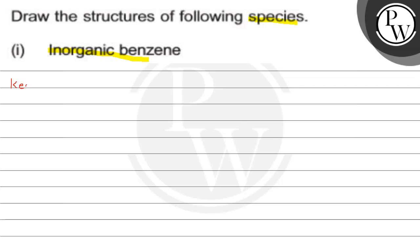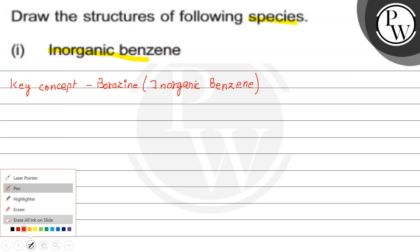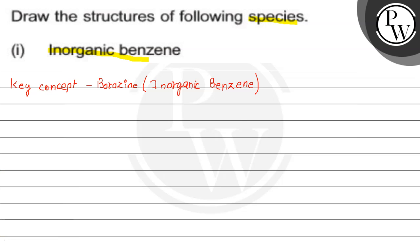Here we write the key concept of this question. Key concept is borazine, also called inorganic benzene. The chemical formula of inorganic benzene or borazine is BH₃ and NH₃, that is B₃N₃H₆.